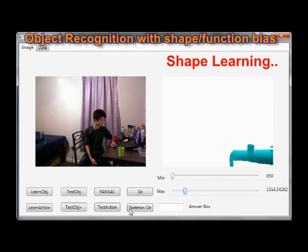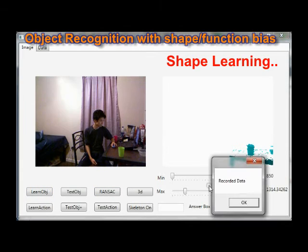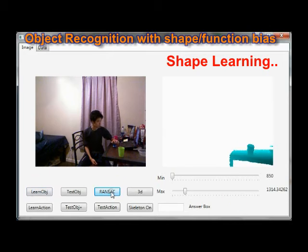This is an updated version of the object recognition model. Previously, the program used only the shape of the object to learn the name. But this time, the program also uses the uses of the object.